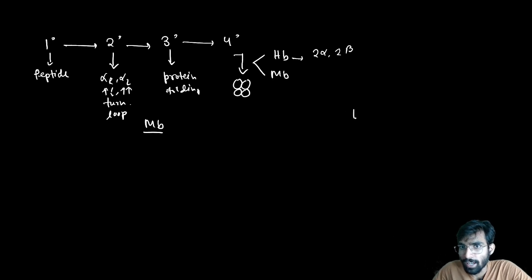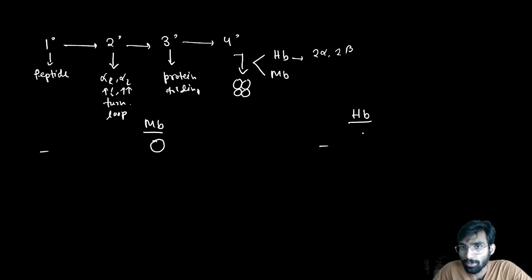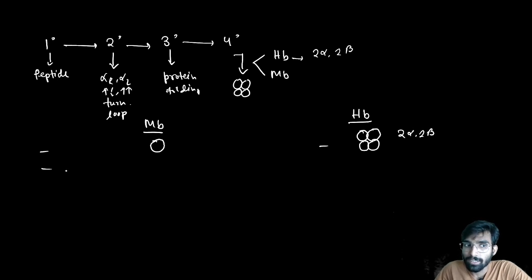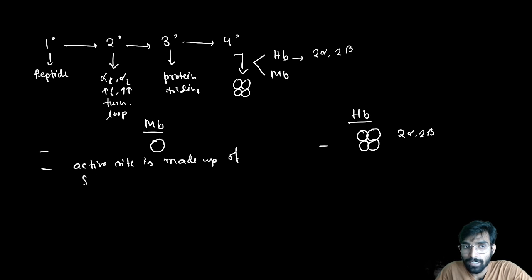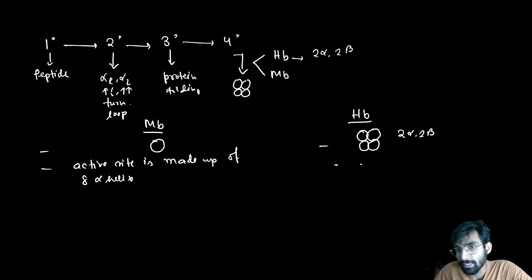In a comparative study: myoglobin is a single subunit, while hemoglobin has four subunits — two alpha and two beta. The active site of myoglobin is made up of eight alpha helices, which is similar in hemoglobin. For the quaternary structure, hydrophobic interactions between subunits are required.